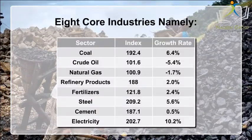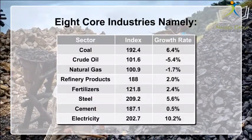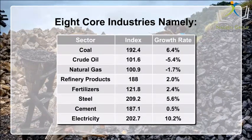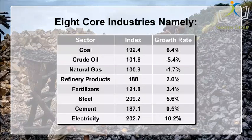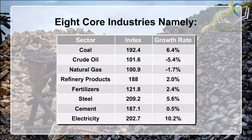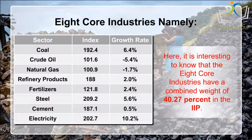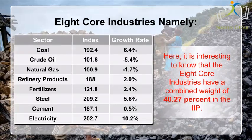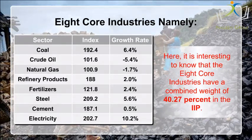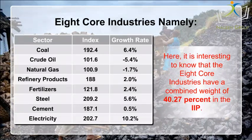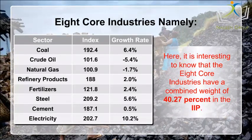Core industries — namely coal, crude oil, natural gas, refinery products, fertilizers, steel, cement, and electricity — are the main branches of the IIP. It is interesting to note that these 8 core industries have a combined weight of 40.27% in the IIP.